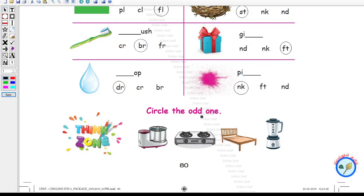Now, circle the odd one. How do you identify the odd one? Here they give four objects. One is a grinder, another is a gas stove, and a cot, and a mixer.